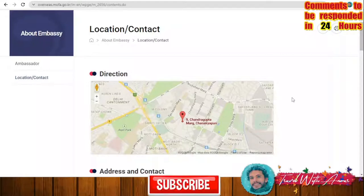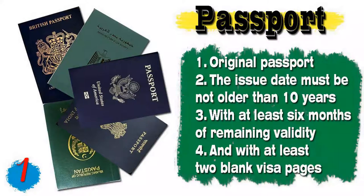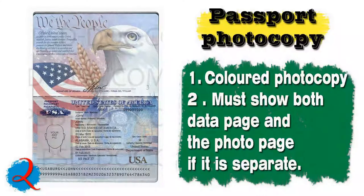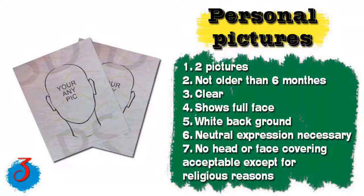You just need to get to the embassy, submit all your documents. In the next section I will tell you all the documents you'll have to prepare to apply not only for the Korean visa but for any visa. The first document is your passport — it must be original, the issue date must be not older than 10 years, with at least six months of remaining validity and at least two blank visa pages for stamps. Number two: a photocopy of your passport — recommended to be colored, must show both the data page and photo page if they are separated.